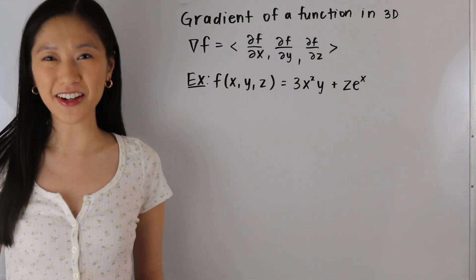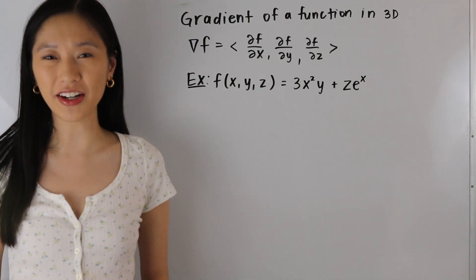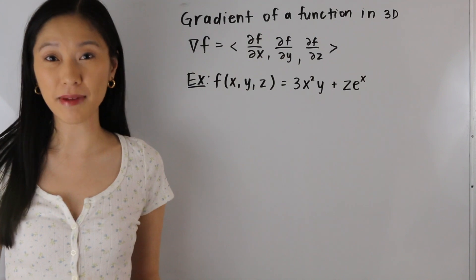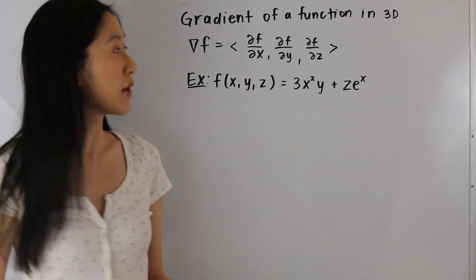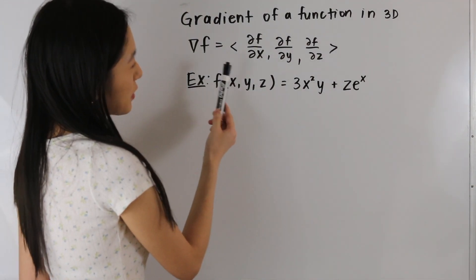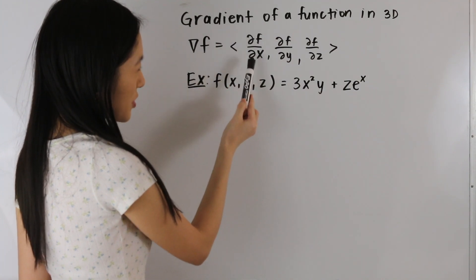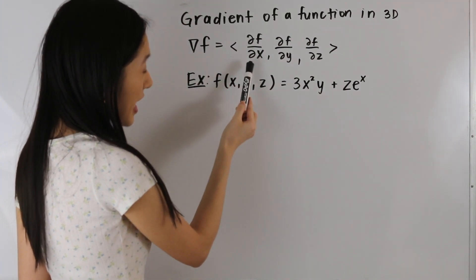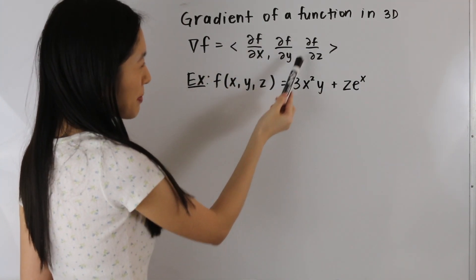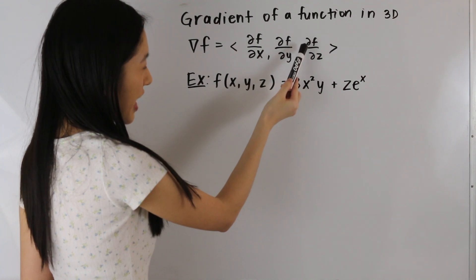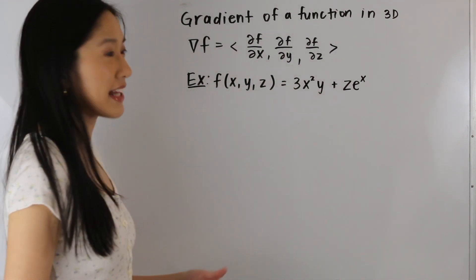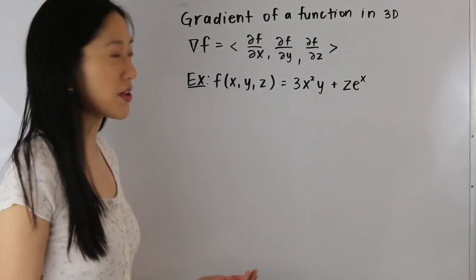Hey guys, Janine here, and in today's video we are going to be learning how to determine the gradient of a function in three dimensions. So we have this formula here: the gradient of f is equal to the partial derivative of f with respect to x, the partial derivative of f with respect to y, and the partial derivative of f with respect to z. So let's go ahead and take a look at an example and apply this.